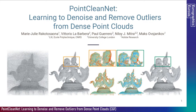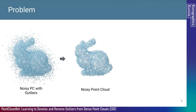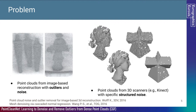Welcome to this talk about PointCleanNet: Learning to Denoise and Remove Outliers from Dense Point Clouds. We are interested in cleaning noisy data that come from various scanning methods. Our problem consists of two main steps: first, given a noisy point cloud with outliers, we want to remove the outlier points; then, we will move the remaining points onto the underlying clean surface. Cleaning noisy point clouds is an important problem because data from different scanning methods such as image-based reconstruction or 3D scanners like Kinect are extremely noisy and need to be cleaned before being exploited or reconstructed into meshes.